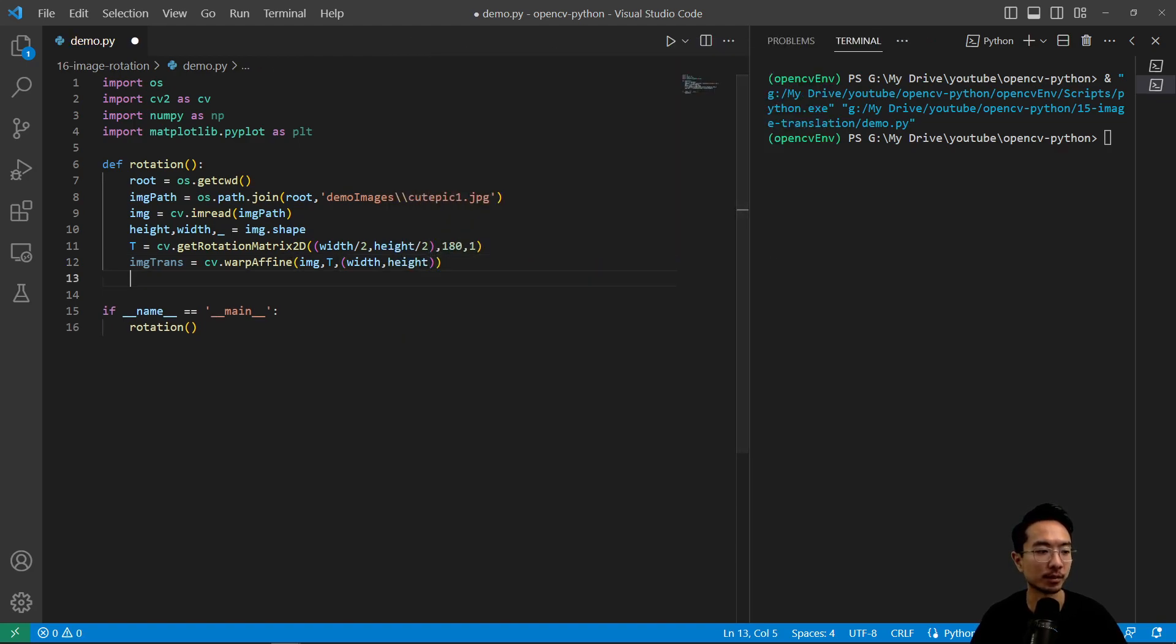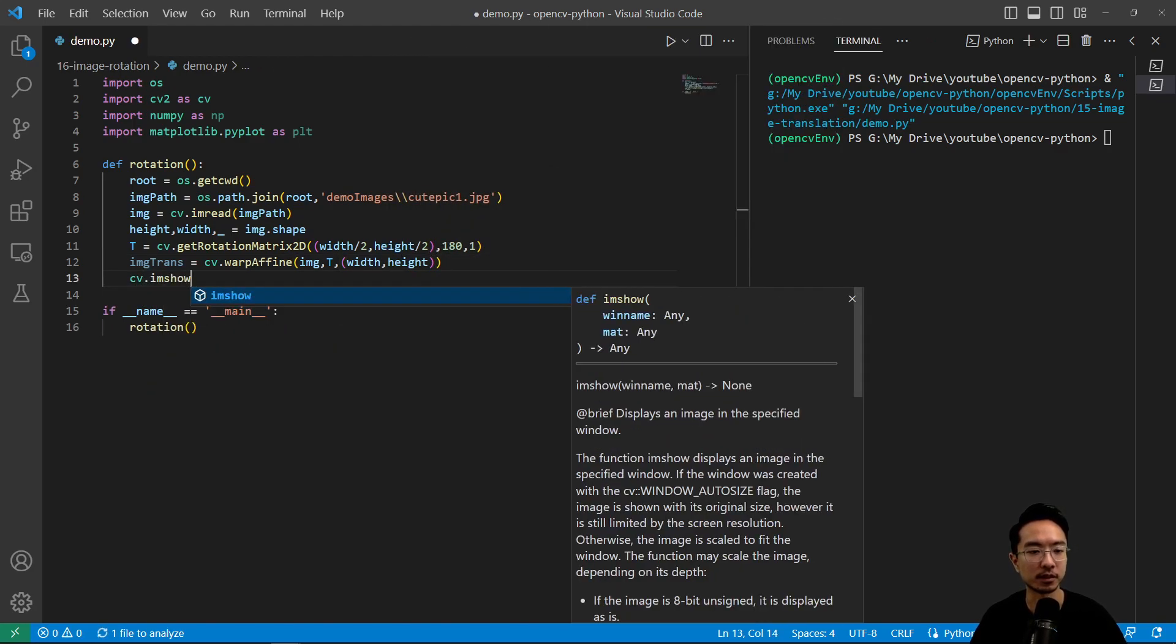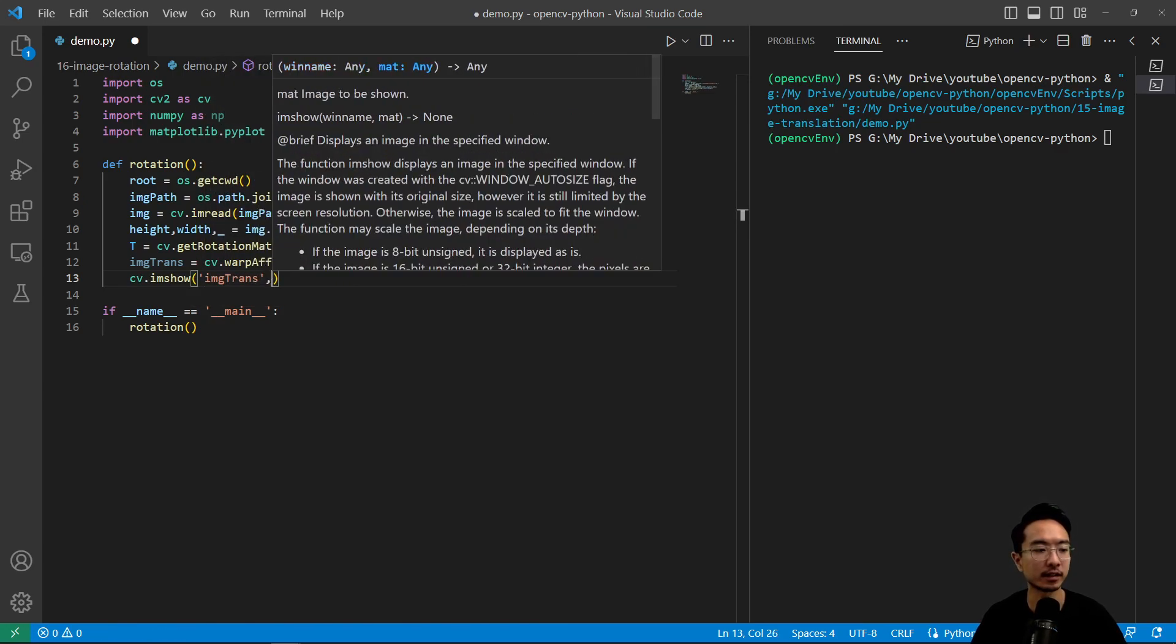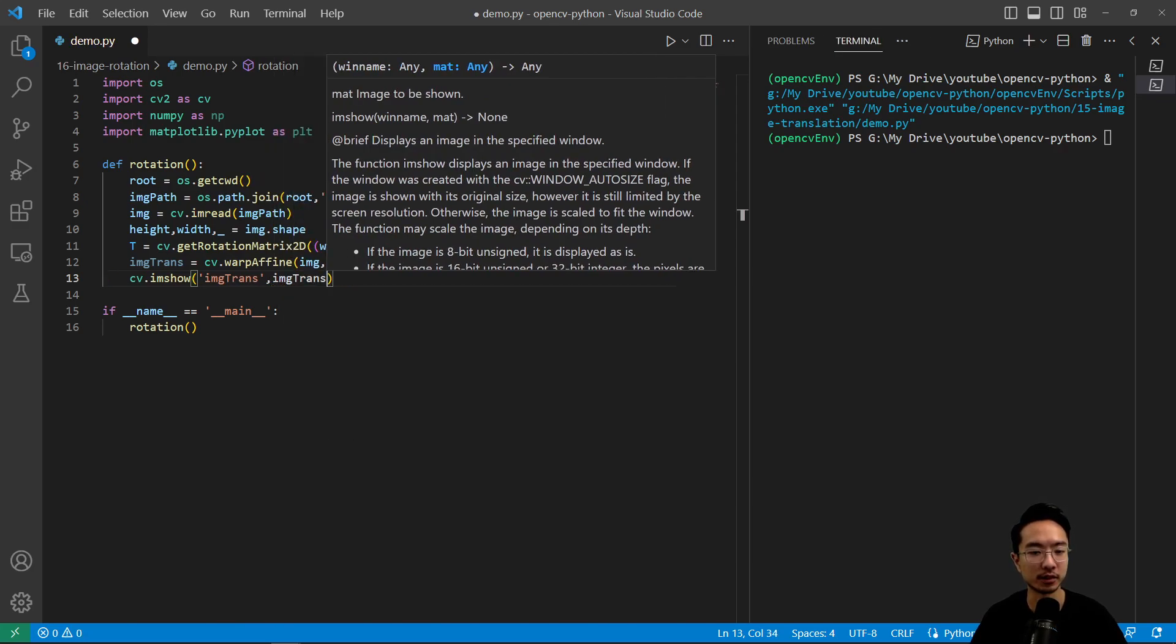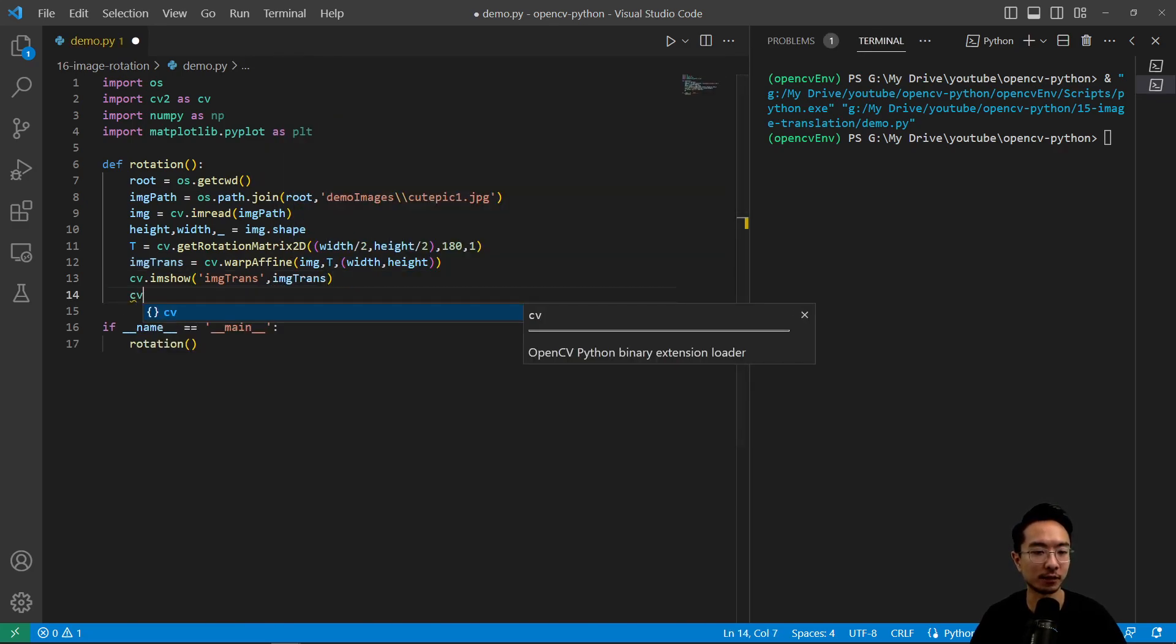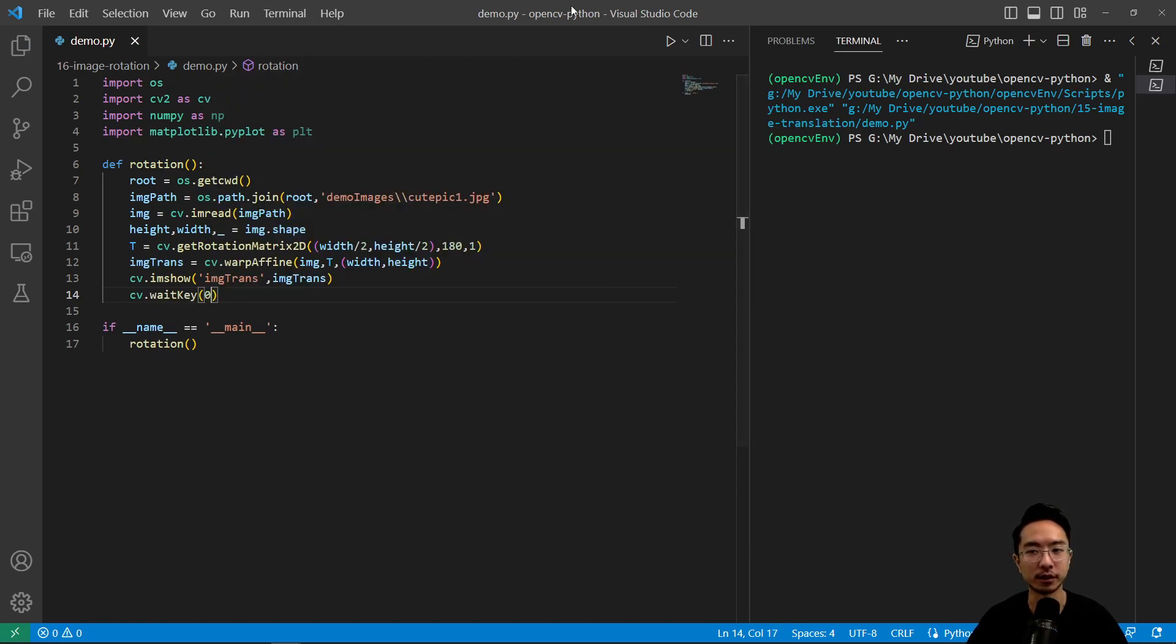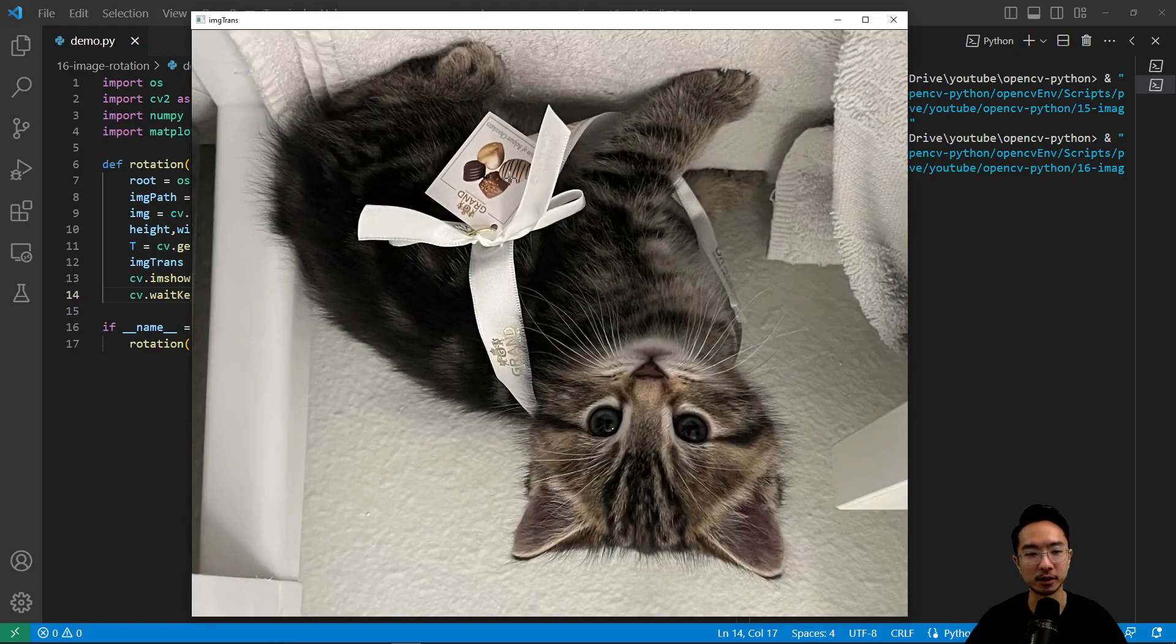Okay, so once we pass that in, we're going to do image.imshow. Name of our image called image trans and our image matrix, then we have our waitkey to not let our image close. So if I go ahead and run this program, we should see our image gets rotated by 180 degrees as we expect it. Okay, so if you found this video helpful, give a like and subscribe, and I'll see you in the next one.